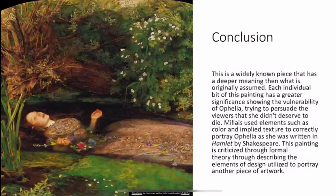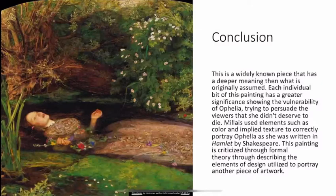This is a widely known piece that has a deeper meaning than what is originally assumed. Each individual bit of this painting has a greater significance, showing the vulnerability of Ophelia and persuading the viewers that she didn't deserve to die. Millais used elements such as color and implied texture to correctly portray Ophelia as she was written in Hamlet by Shakespeare. This painting is criticized through formal theory by describing the elements of design utilized to portray another piece of artwork.